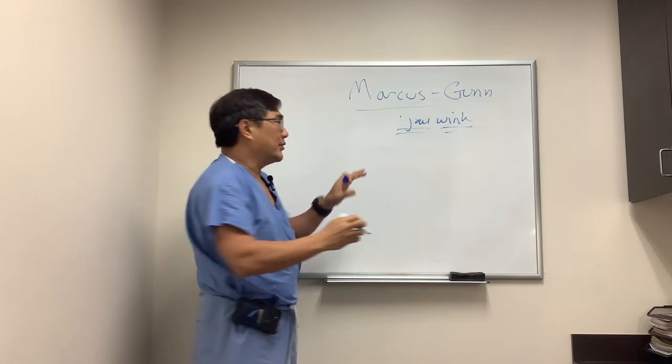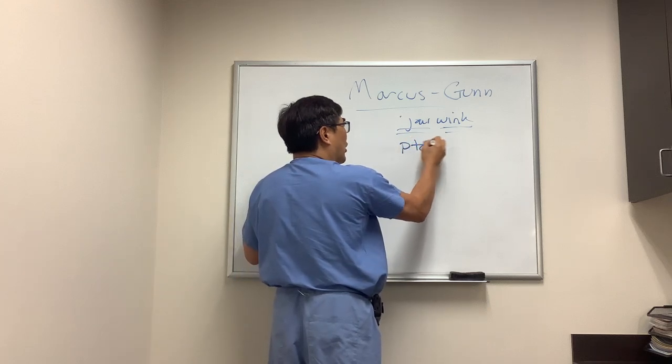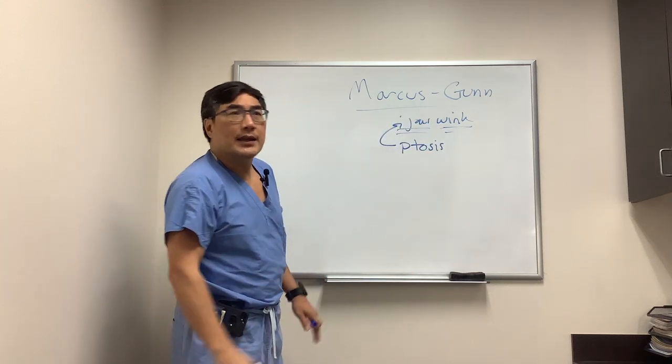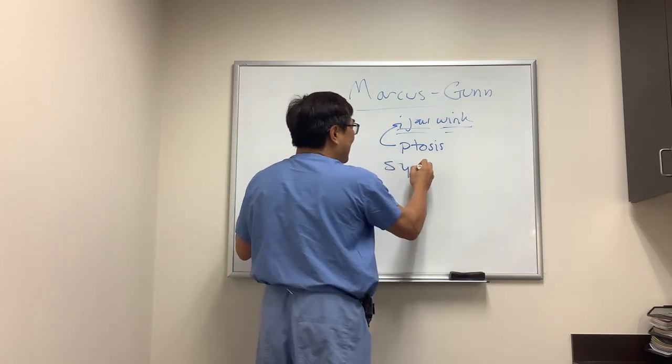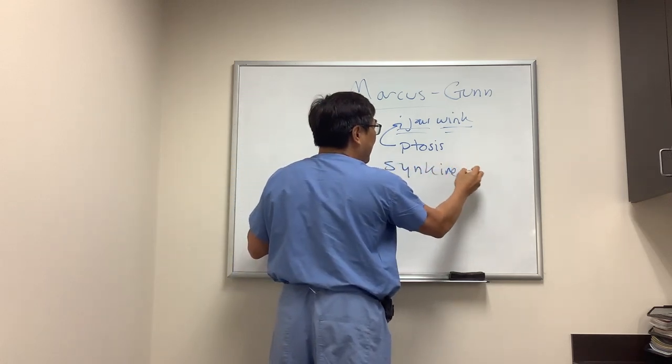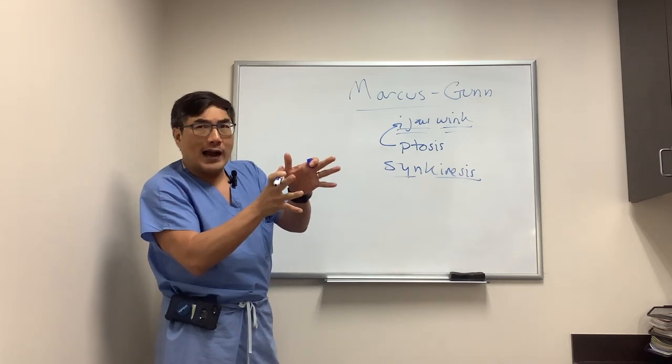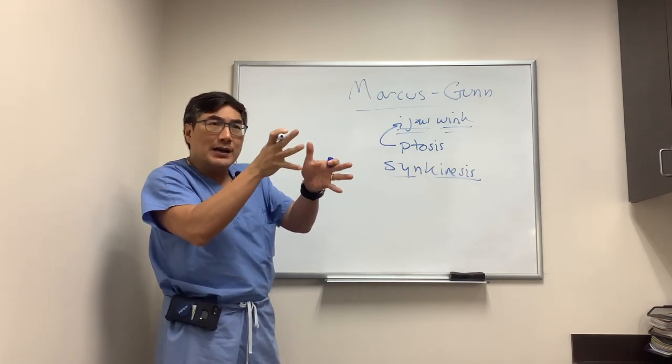your eyelid might close. This causes a ptosis that's induced by jaw movement. This is what we call a synkinesis. Syn means together, kinesis means move, so it moves together. It's an abnormal wiring between the two muscles.